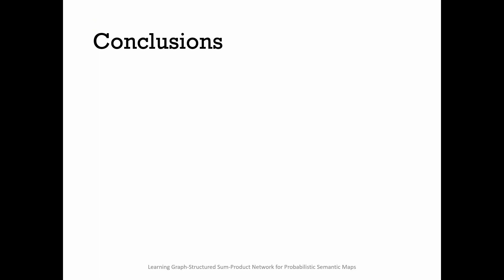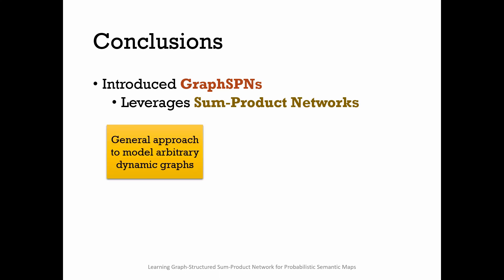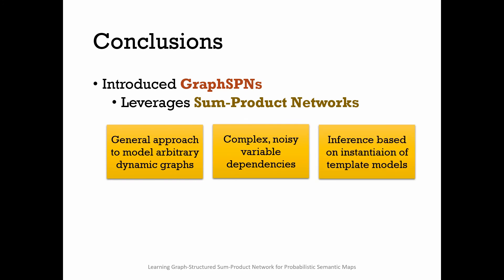In conclusion, we introduced Graph SPNs, a new deep probabilistic model to structural prediction that leverages Sum-Product Networks. It is a general approach to model arbitrary dynamic graphs. It is capable to handle complex noisy variable dependencies. And it is able to perform inference based on instantiating template models that learn the general knowledge of variable interactions. And we applied Graph SPN to model semantic maps.